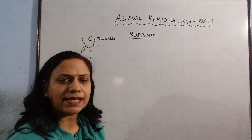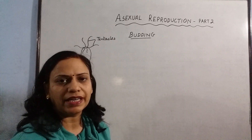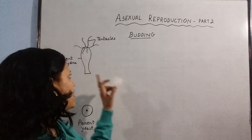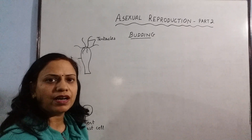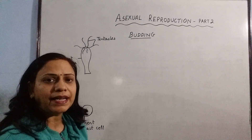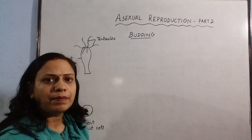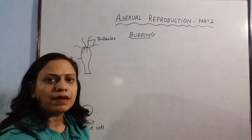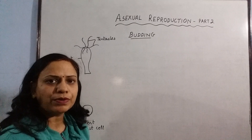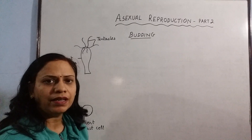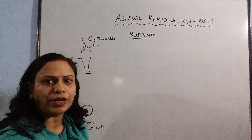The first example most commonly studied for budding is hydra. Hydra is a very simple multicellular animal — it is not unicellular but multicellular — and it reproduces by the process of budding, which is an asexual method of reproduction.